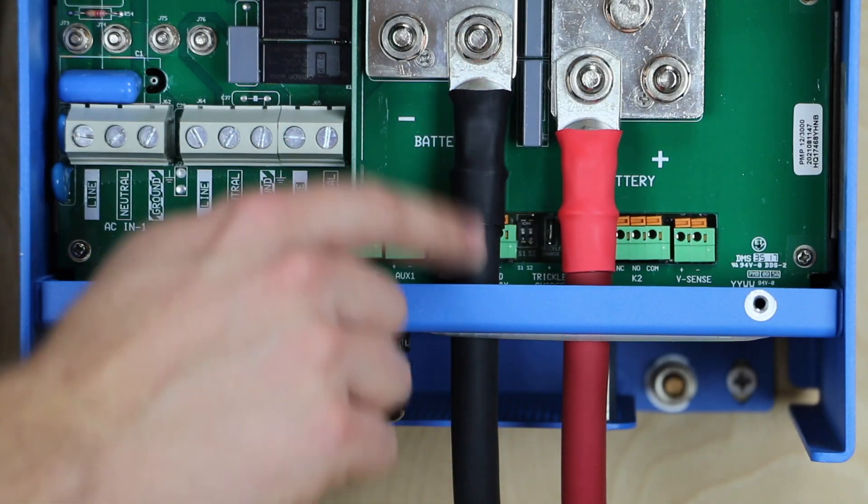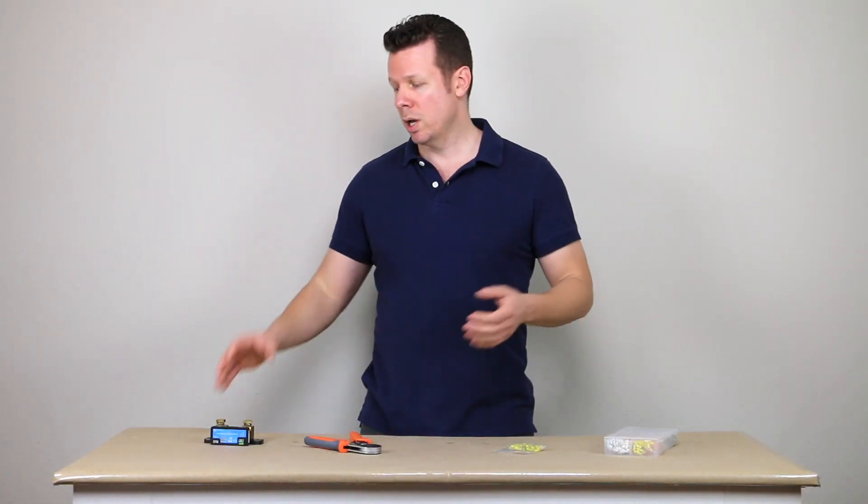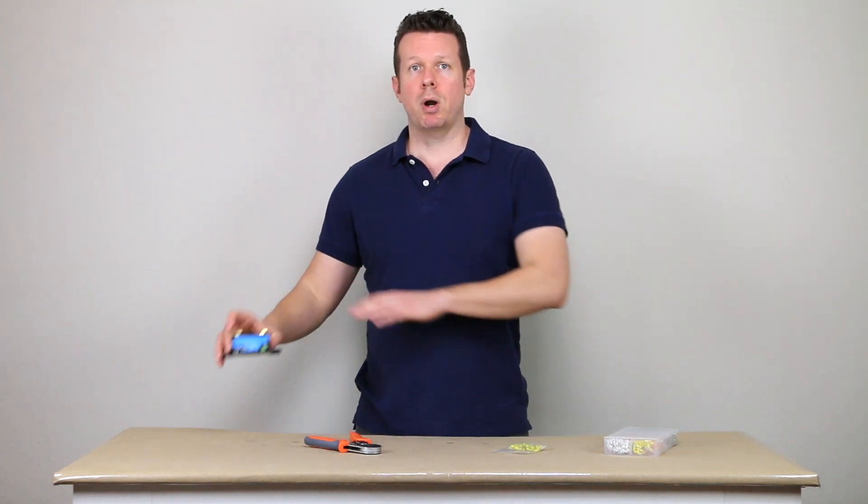Now with the larger conductors, you're going to have lug terminals typically and you're going to be able to bolt those cables in place. But with the small signal and power wires, you're going to want to essentially insert them into inputs on, for instance, this battery monitor here.